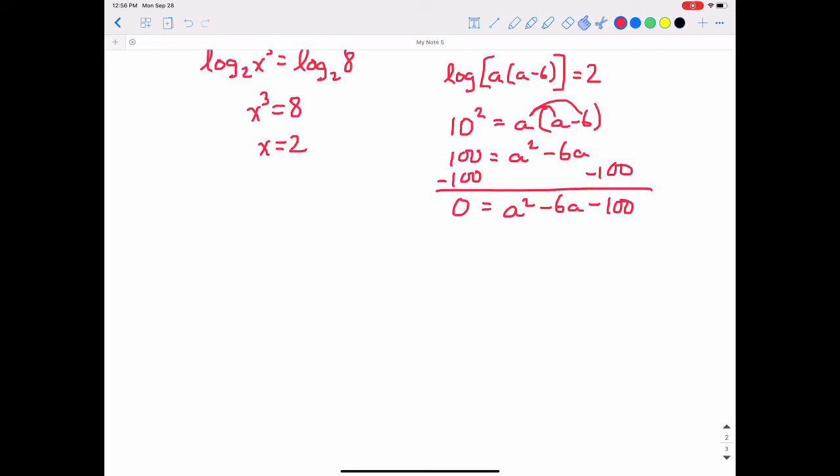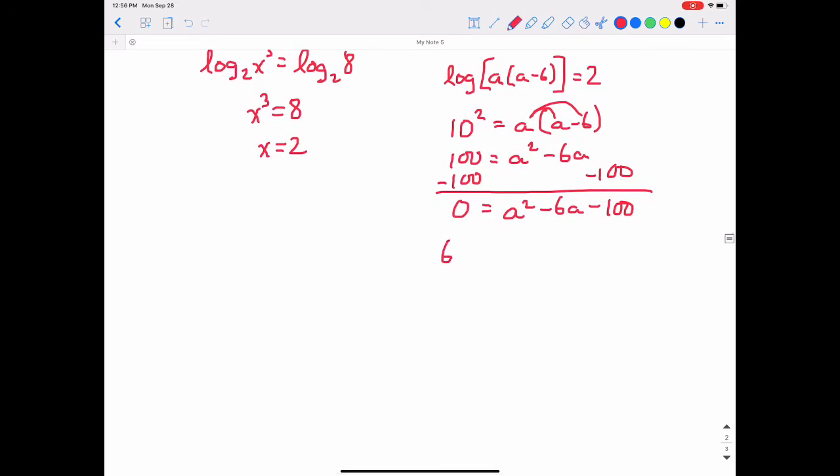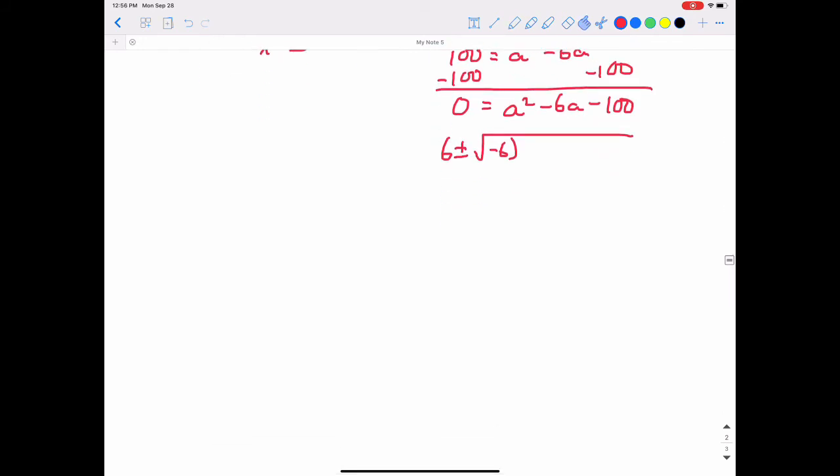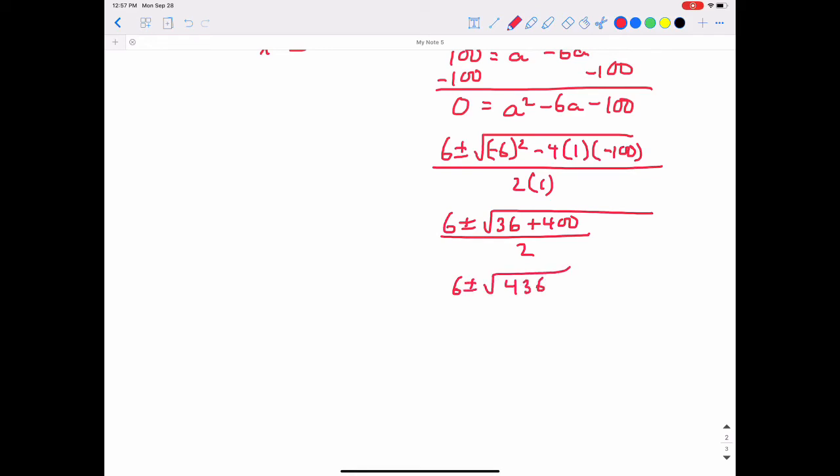So we're going to have negative b, which will be positive 6 in this case, plus or minus the square root of negative 6 squared minus 4 times a is 1, c is that negative 100, all over 2 times the 1. So 6 plus or minus the square root of 36 plus 400 over 2. 6 plus or minus the square root of 436 over 2.